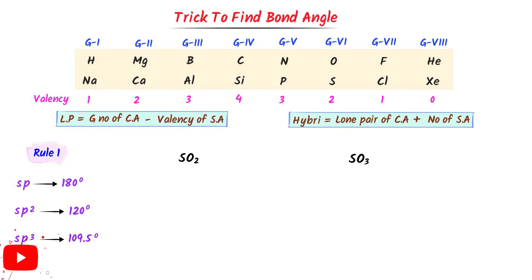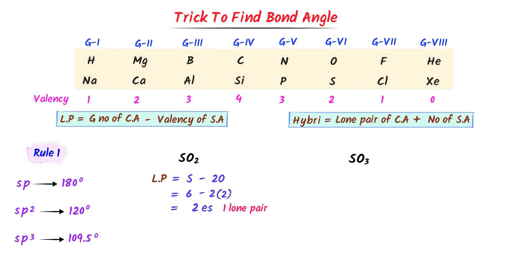Thirdly, consider sulfur dioxide and sulfur trioxide. For SO2, lone pair equals group number of sulfur (6) minus 2 into 2 (valency of oxygen). I get 2 electrons, so the lone pair is 1. Hybridization: 1 lone pair plus 2 surrounding atoms equals 3, meaning SP2 hybridization. The bond angle will be 120 degrees.